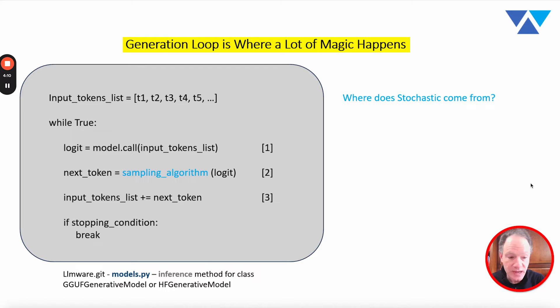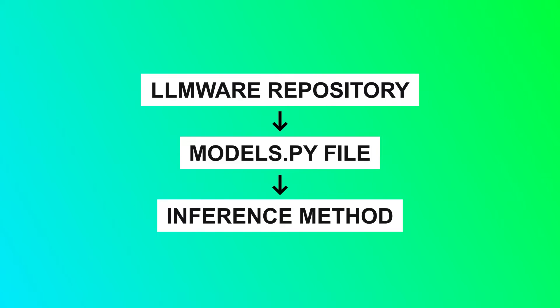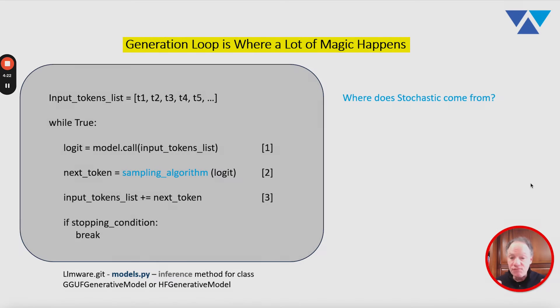Now, if you look at Hugging Face code or LLAMA CPP code, if you look at any kind of online generation, it will have some type of loop that looks like this. If you want to see a good concrete example of it, you can go to the LLMware repository, look in the models.py file, look at the inference method for either the GGUF generative model or the HF generative model. Very similar kind of generation scripts that you're going to find all over the place.